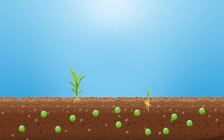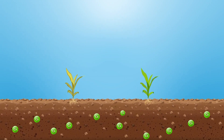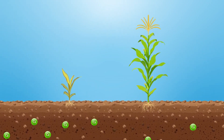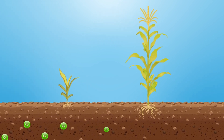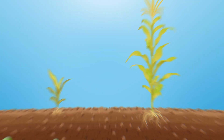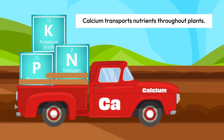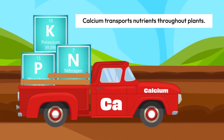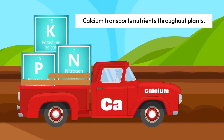Calcium is also responsible for cell division in the plant. A deficiency in soluble calcium decreases cell division, which in turn negatively impacts growth and yield. Calcium is also responsible for the transportation of nutrients such as NPK into the plant, moving them from the root all throughout the plant.